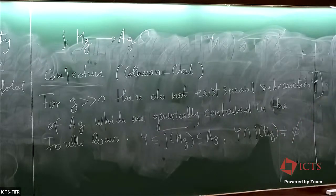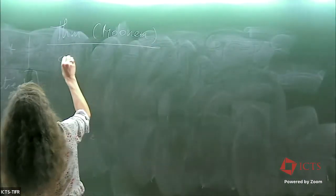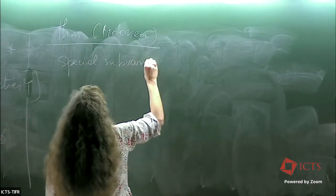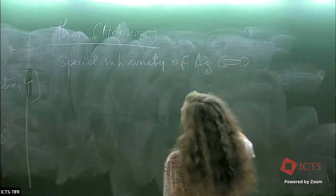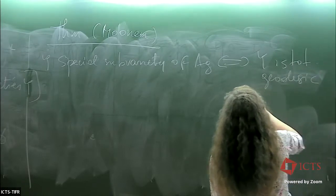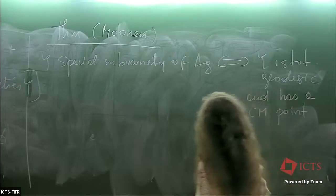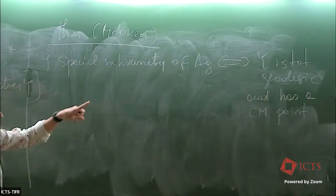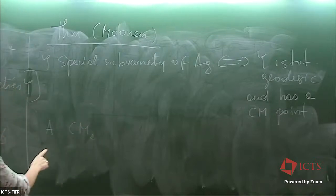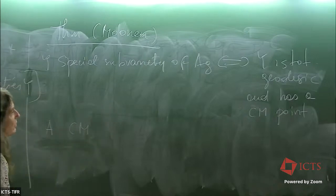For us, there is a theorem by Moonen which says that a special subvariety of A_g is equivalent to saying Y is totally geodesic plus an arithmetic condition: it has a CM (complex multiplication) point. This means there exists in Y an abelian variety A which is CM, where CM concerns the endomorphism algebra of A. To say A is CM means there exists a field containing the endomorphism algebra over Q of A such that the degree over Q is greater than or equal to twice the dimension of A.